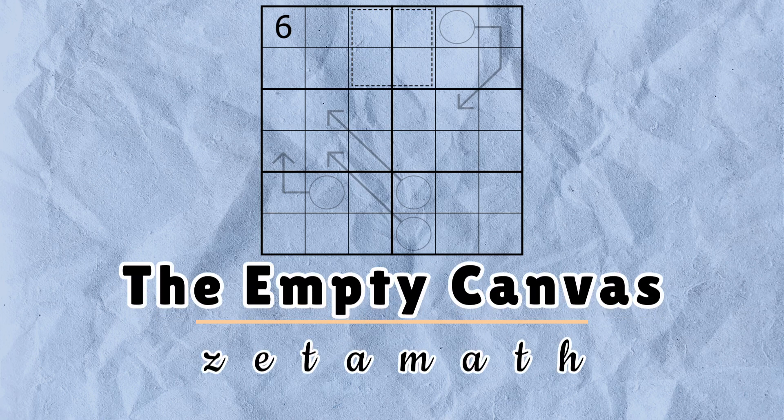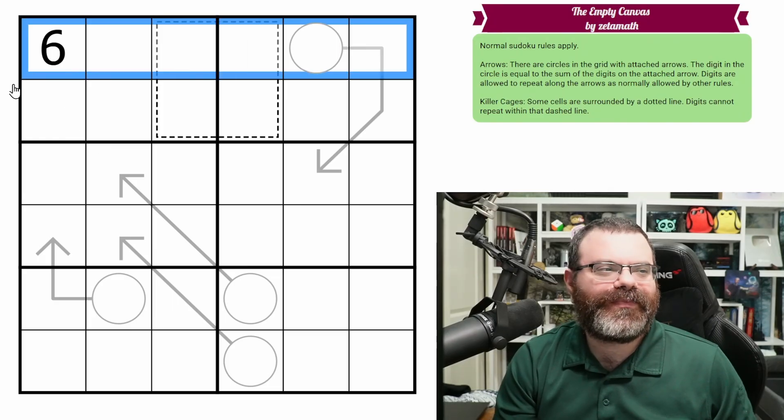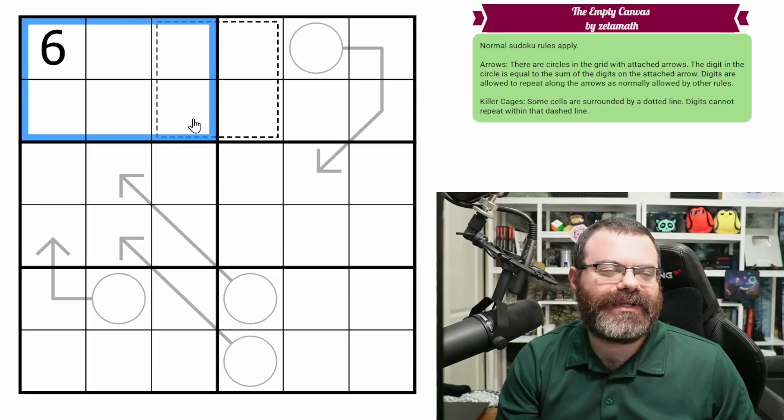Hello, let's continue our Sudoku adventure with The Empty Canvas by ZetaMath. We have normal 6x6 Sudoku rules, so in each row, each column, and each 2x3 box, we are placing the digits 1 to 6 exactly once each.